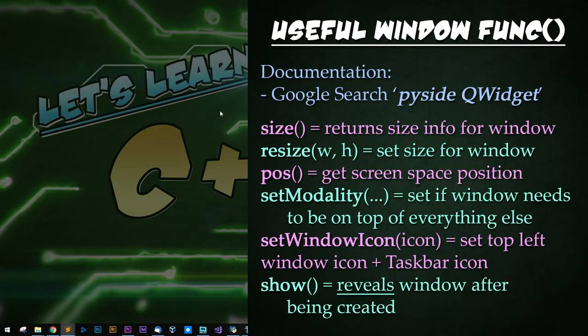Now let's go over some important QWidget documentation. Here are some important window functions and methods. Size is great for getting the size info for a window or widget. Resize can be used to set the width and height of a window. Pos can get the screen space position — I often use this when saving and loading settings to keep the window where the user likes the tool or application. It's a quality of life feature that's nice.